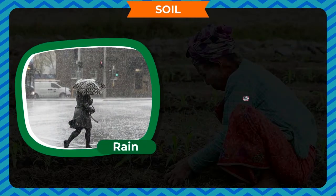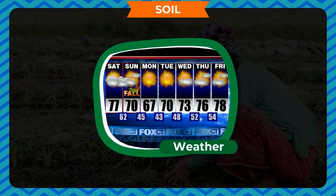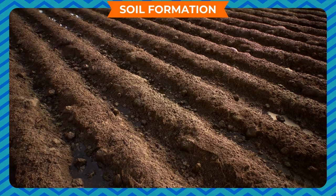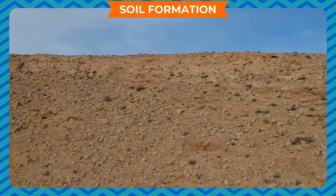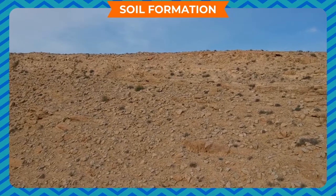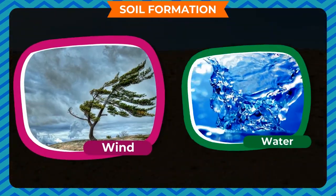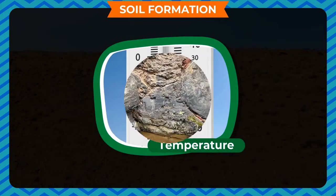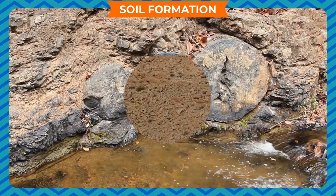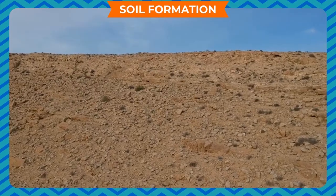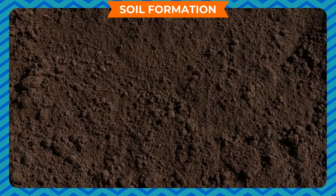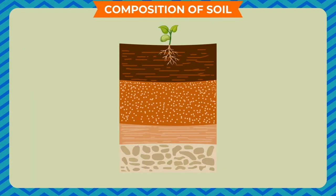Plants, animals, rain, wind, and weather play an important role in the formation of soil. Soil formation takes a very long time — it is a very slow and gradual process. Soil is formed by the breakdown of rocks due to the action of wind, water, temperature, etc. on the earth's crust. This is called weathering of rocks. These rocks break into small pieces and further into smaller particles over millions of years to form soil.